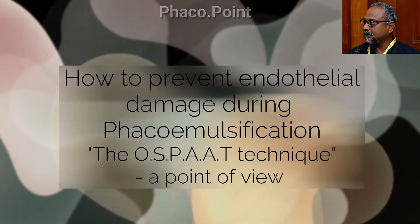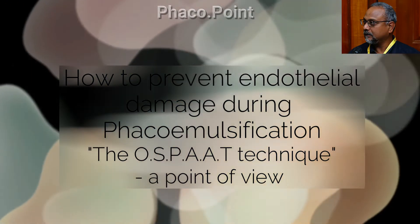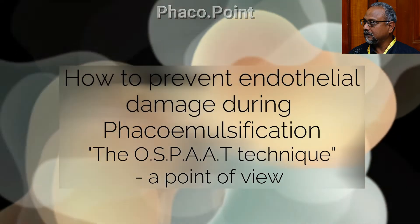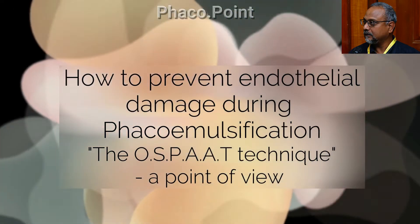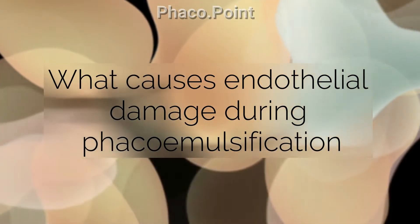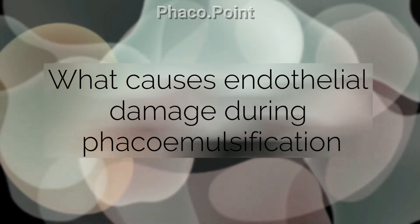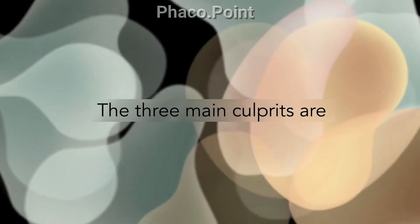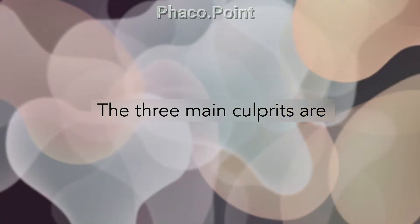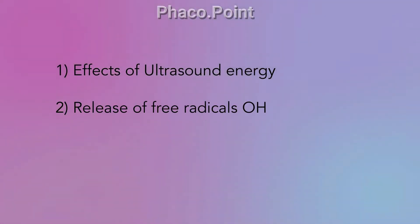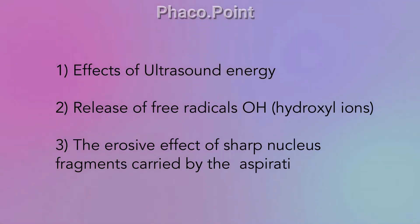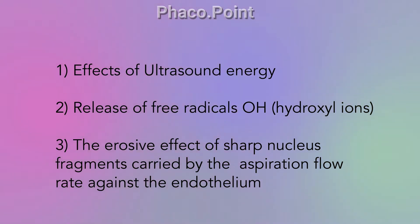In this video I would like to share my point of view on how to prevent endothelial damage during the process of phacoemulsification. To do this we should know what the causes are that produce endothelial damage during phaco. The three main culprits are: firstly the effect of ultrasonic energy, second the release of toxic hydroxyl ions during phaco emulsification, and third the erosive effect of sharp nucleus fragments carried by the aspiration flow rate.